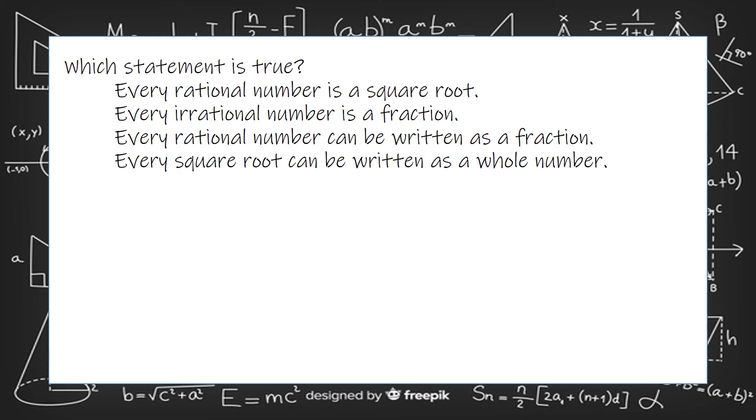Every rational number is a square root. Every irrational number is a fraction. Well, we know that one's not true right off the bat, because irrational numbers cannot be put in fraction form. Every rational number can be written as a fraction. Yes, that's the definition of a rational number.